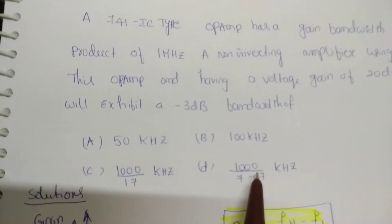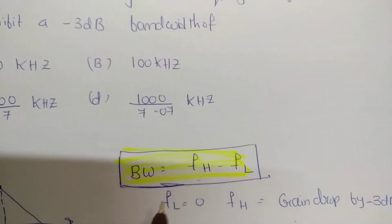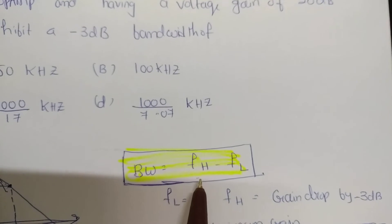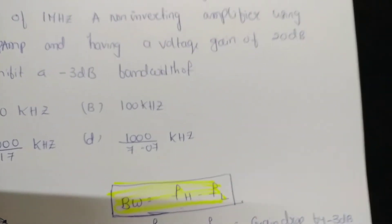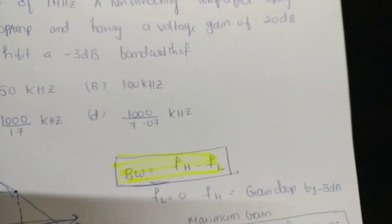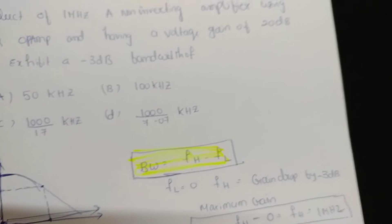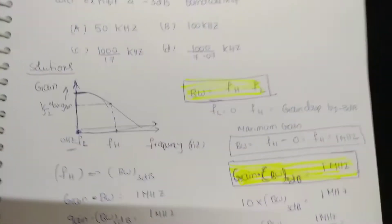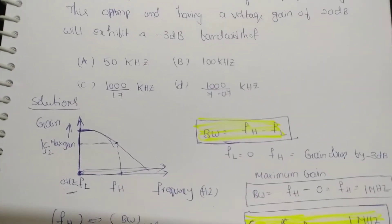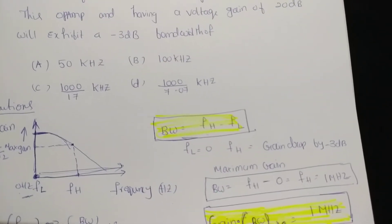What is bandwidth? Bandwidth is the difference between upper cutoff frequency and lower cutoff frequency. The definition of bandwidth is the range of frequencies for which the gain is greater than or equal to 1 by root 2 times its maximum gain — that is, 0.707.